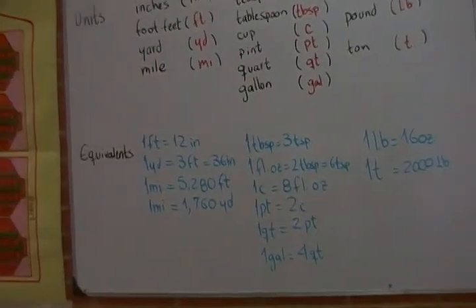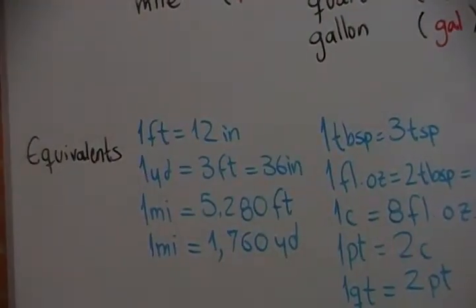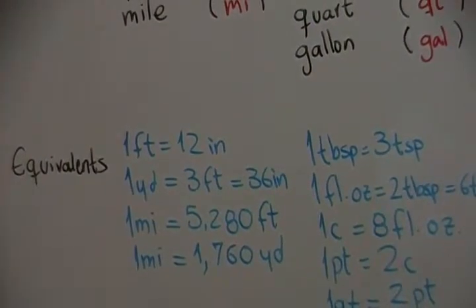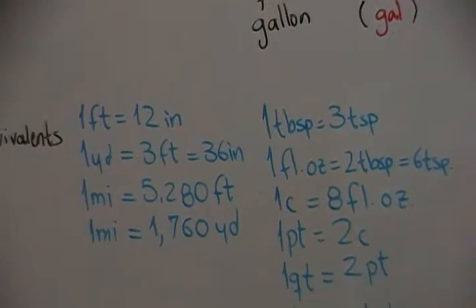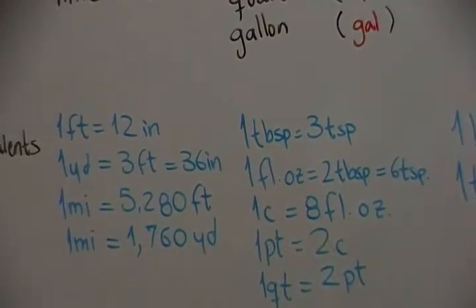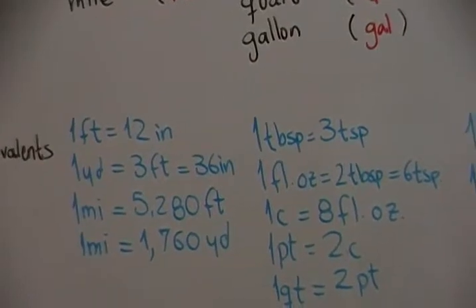Here we have some equivalents or conversion factors. One foot is 12 inches, one yard is 3 feet or 36 inches, one mile is 5,280 feet, and one mile is also 1,760 yards.